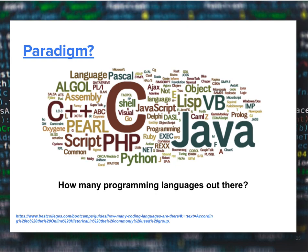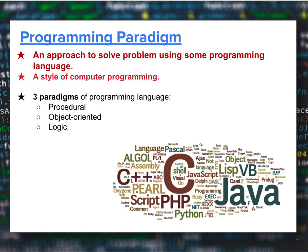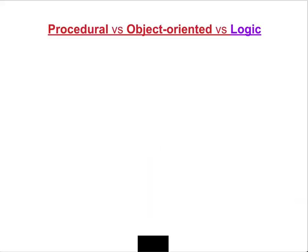So now you know what a paradigm is. A programming paradigm is a way or a style for the computer to solve problems using a programming language. Simply put, it is a style and a way of solving problems using programming language. There are three types of paradigms we will cover throughout our syllabus: procedural, object-oriented, and logic.